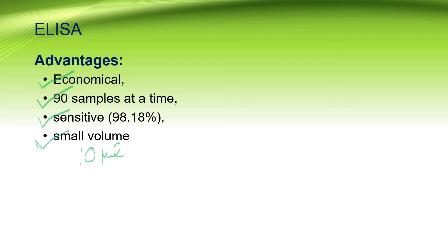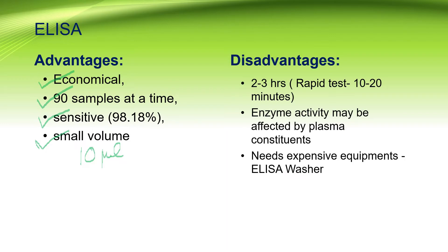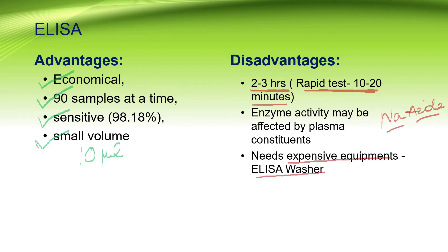The limitations or disadvantages of using ELISA are: it takes 2-3 hours while a rapid diagnostic kit takes only 10-20 minutes to give the result. If the plasma contains substances like sodium azide, it inhibits the activity of the enzyme used in the ELISA reaction. It also needs expensive equipment like an ELISA washer, and to maintain it we need trained staff.